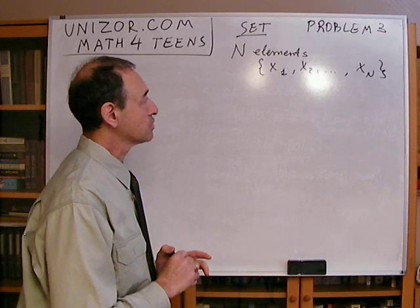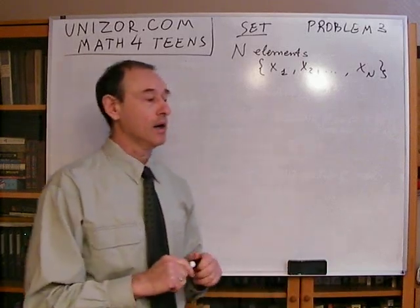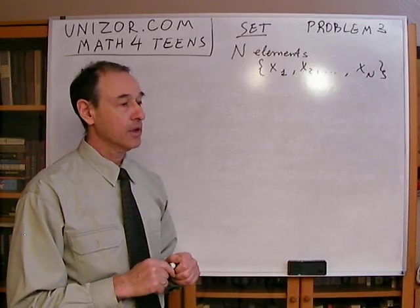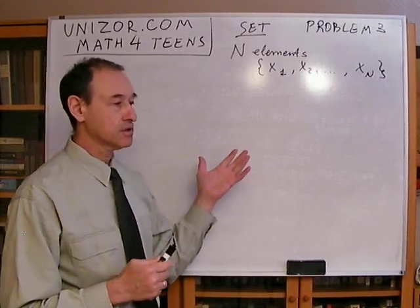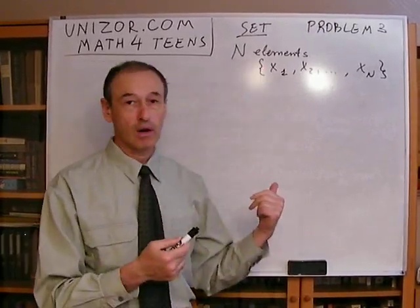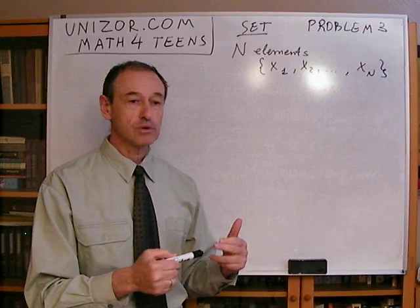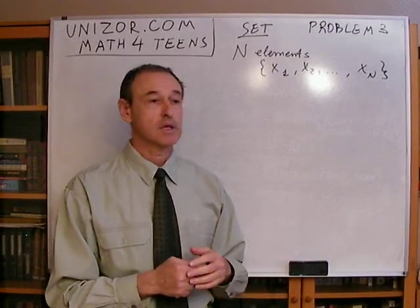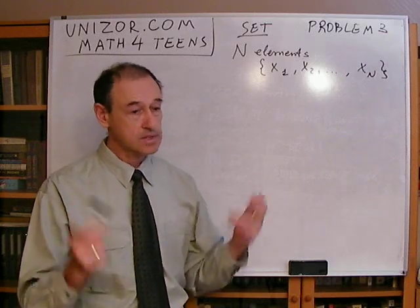This is a good moment to press the pause button and really think about this, because this is a real problem. Try to come up with your own solution. As a hint, you can take a couple of different sets — like n equals four in exercise one — and try to enumerate all the different subsets of a set with three elements or two elements, and then try to guess the formula.